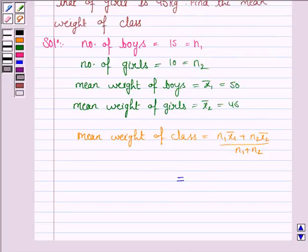So we have 15 times 50 plus 10 times 45, divided by N1 plus N2. N1 plus N2 is equal to 25. We are given that the total number of students is 25.